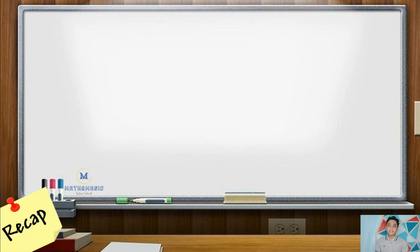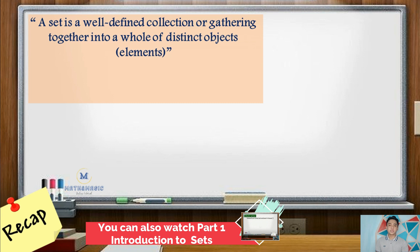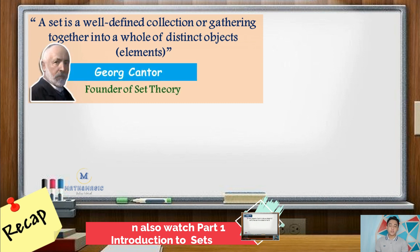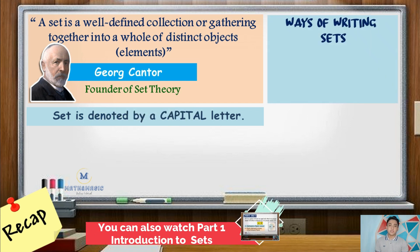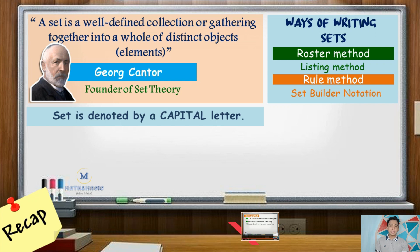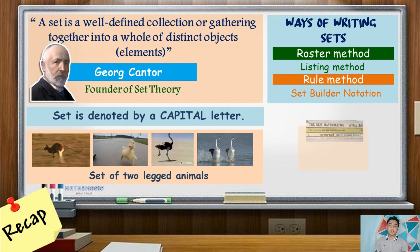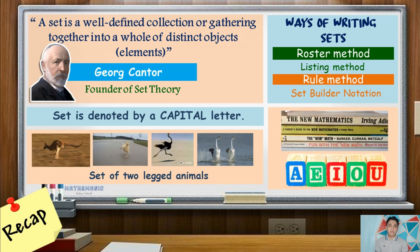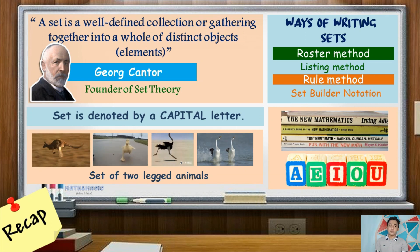So recall, a set is a well-defined collection of distinct objects called elements. Its proponent is George Cantor. Sets are denoted using a capital letter and can be written in two methods: the roster or listing method, and the rule or set builder notation. For this video, when dealing with operations on sets, we will typically write the sets in roster or listing method so that it will be easier for us to visualize each element.